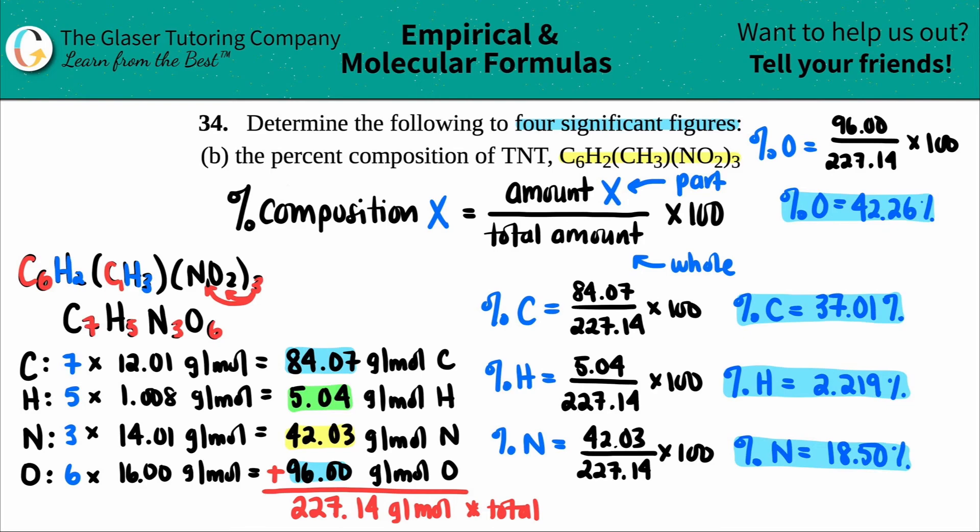Now, in order to just check yourself, what should a percent always equal to? The total amount of percent is always 100%. So if we did this correctly, our number, when we add all the percents up should come very close to 100%, if not exactly 100. So I'm just checking that out right now, guys. And yeah, it comes out to 99.989, which when rounded is 100%. So there you go.